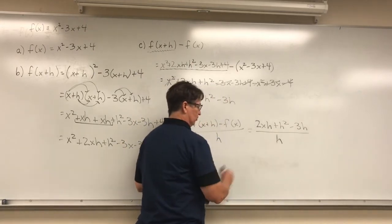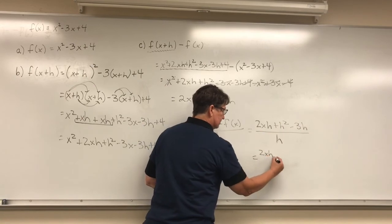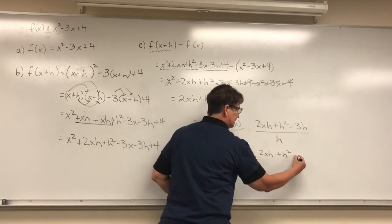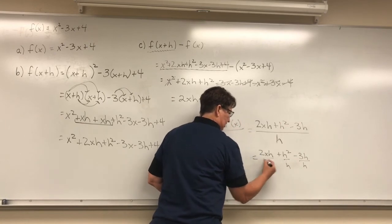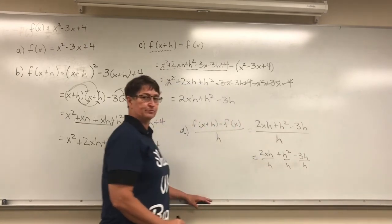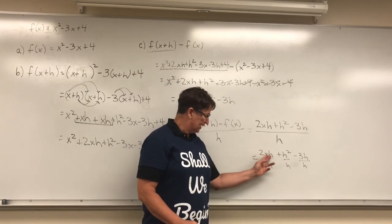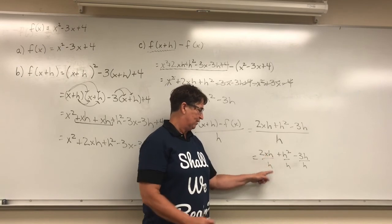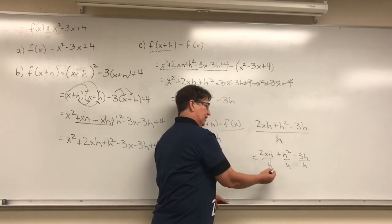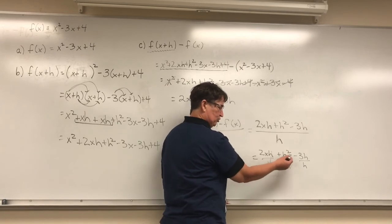So let's do that here with our variables. We're just going to rewrite this as three different fractions, each with its own denominator. Now that we've done that, now this is just multiplication and division. So I can go ahead and say h divided by h is 1. And here I can say h squared, which remember is just h times h.